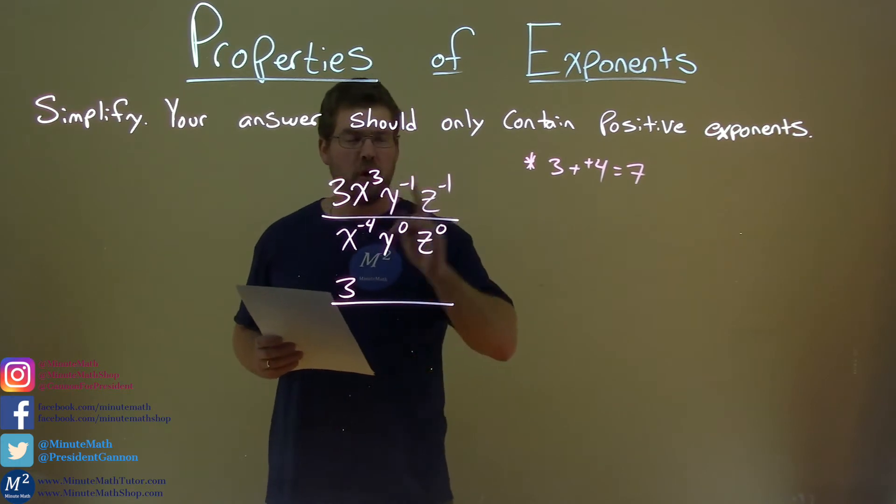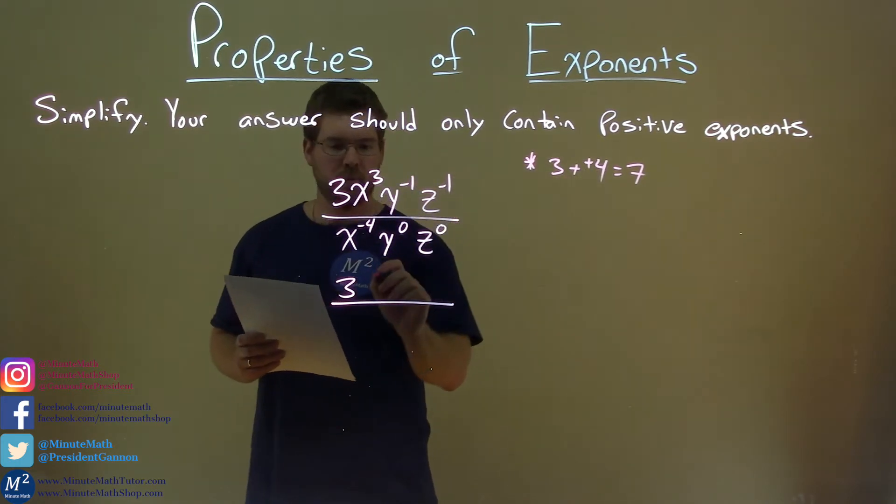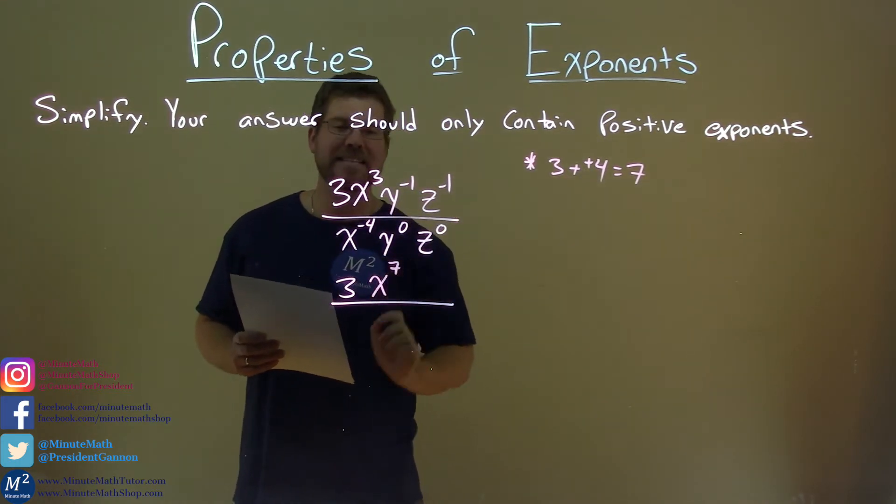3 minus a negative 4 is like adding a positive 4. That's 7. So, positive 7 stays in the numerator. We have x to the positive 7th power.